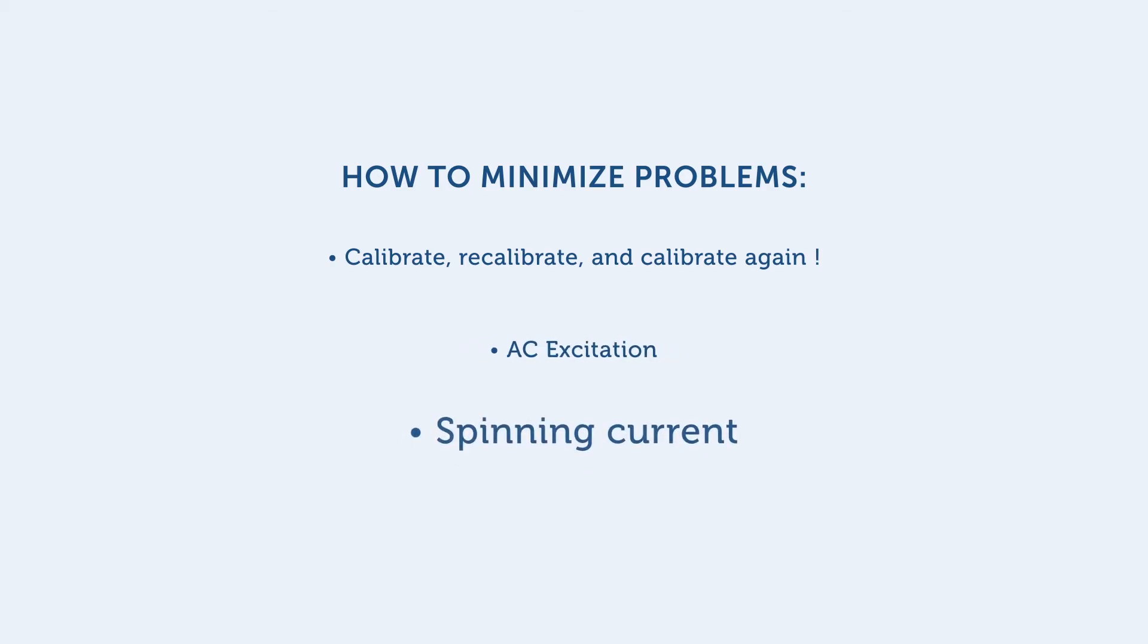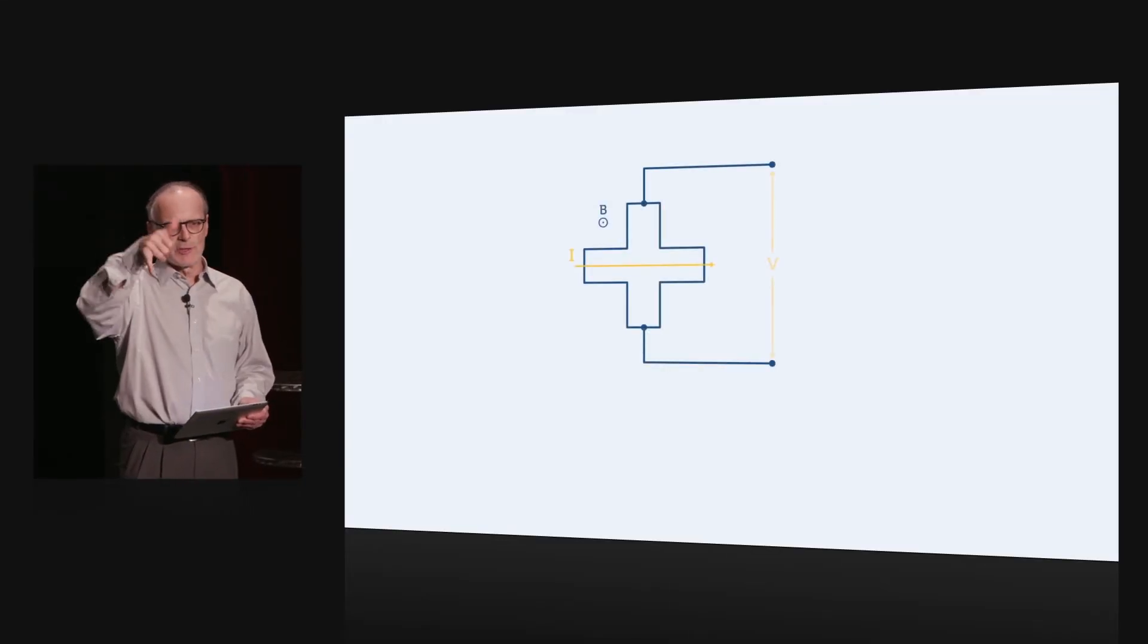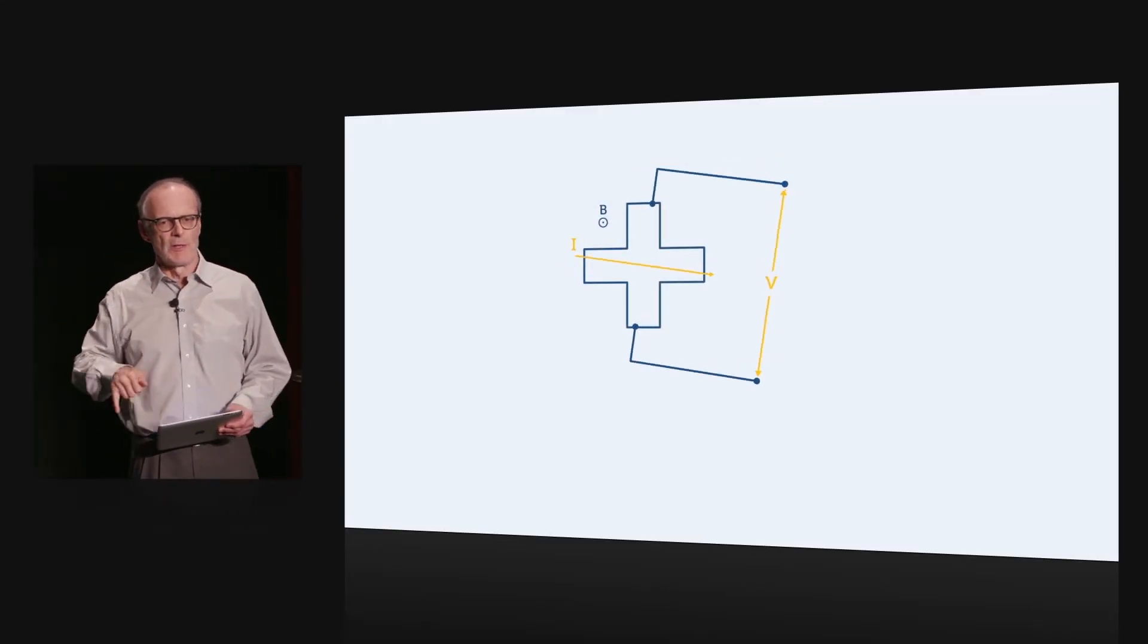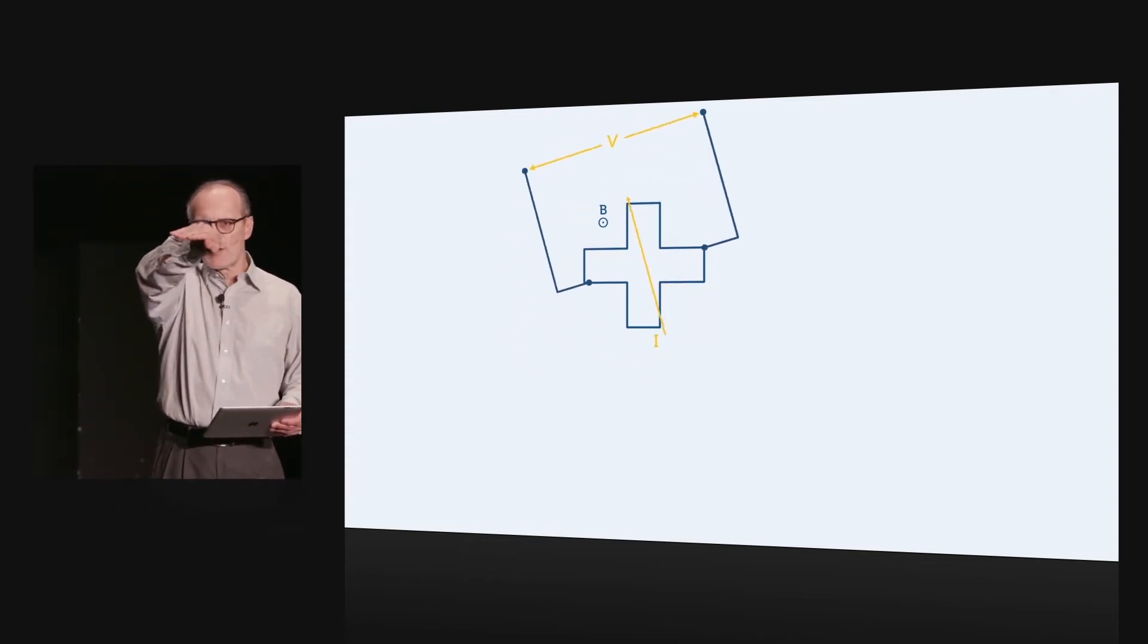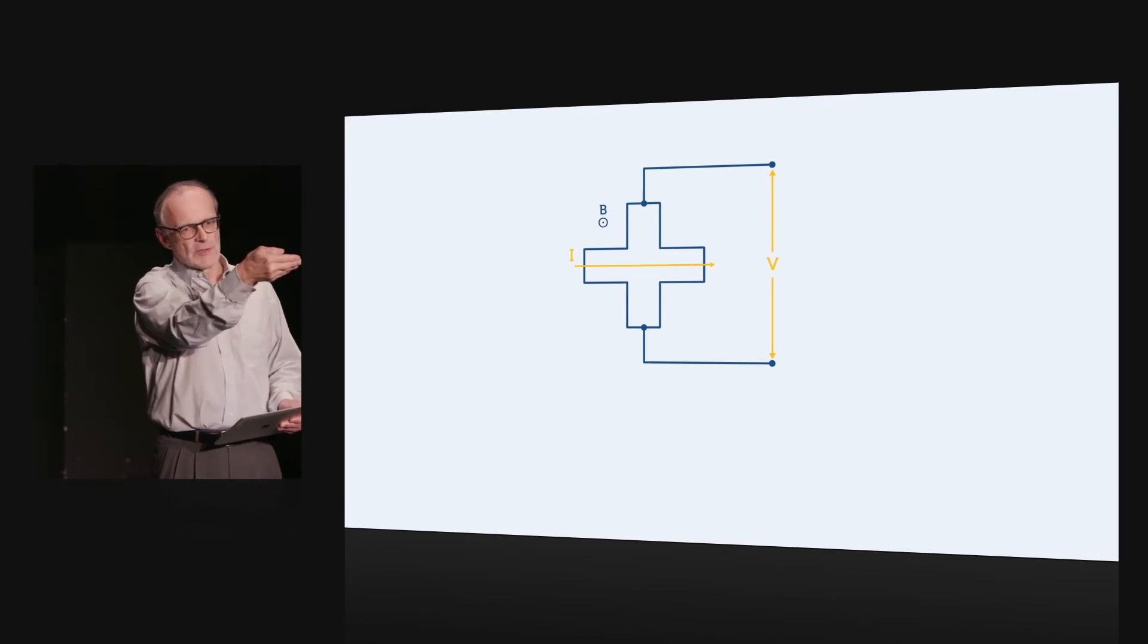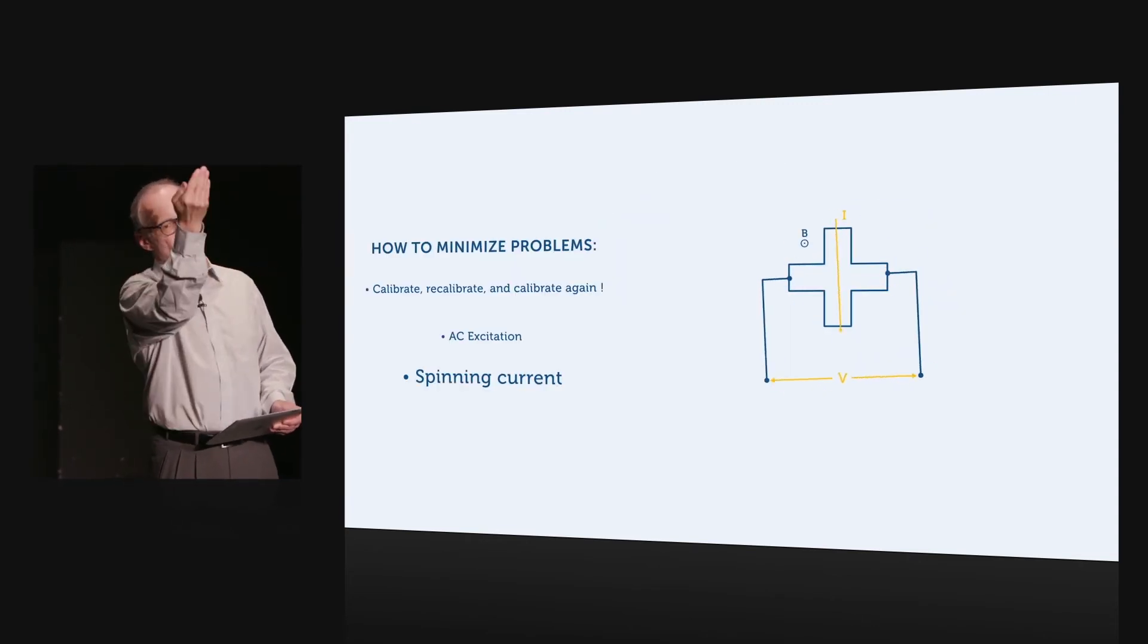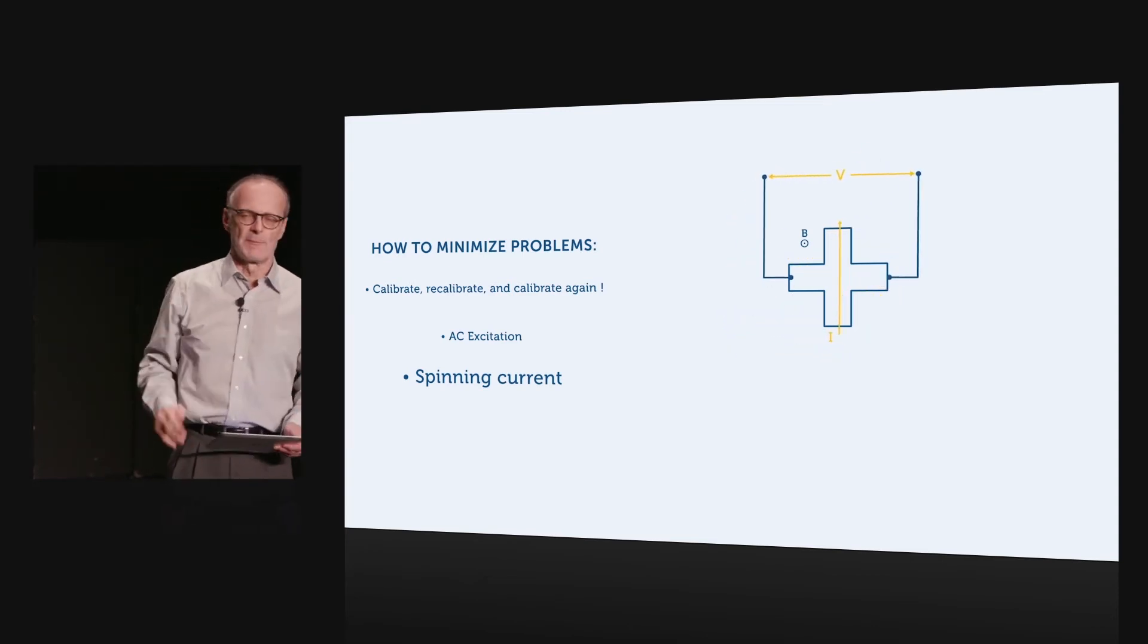Finally, the spinning current technique is a more recent technique that switches the voltage and the current terminals. So, the direction of the current goes from being horizontal to being vertical and then back the other way on the horizontal but flowing the other way and then vertical flowing the other way. So, the current sort of spins around, hence the name, spinning current.